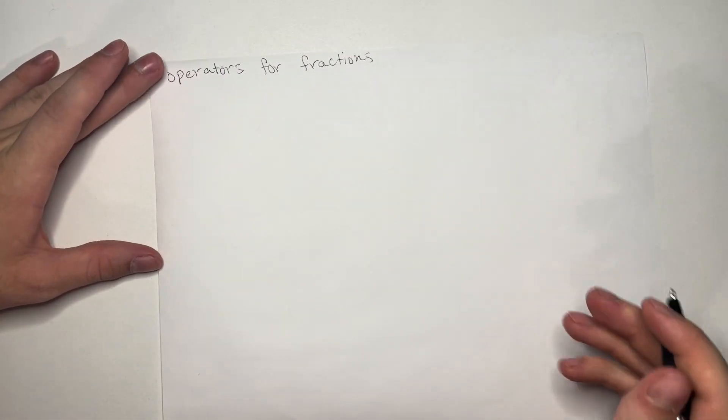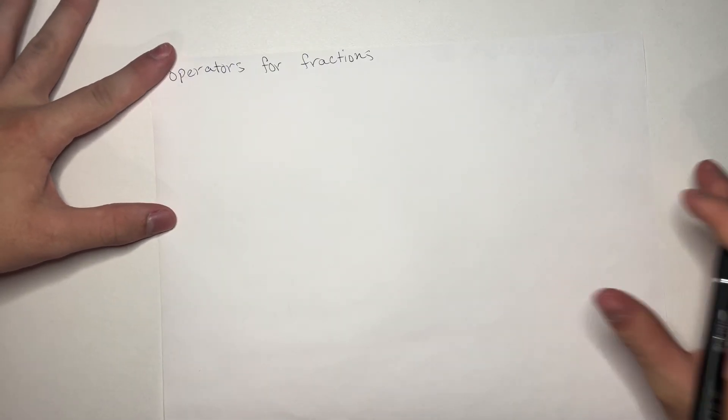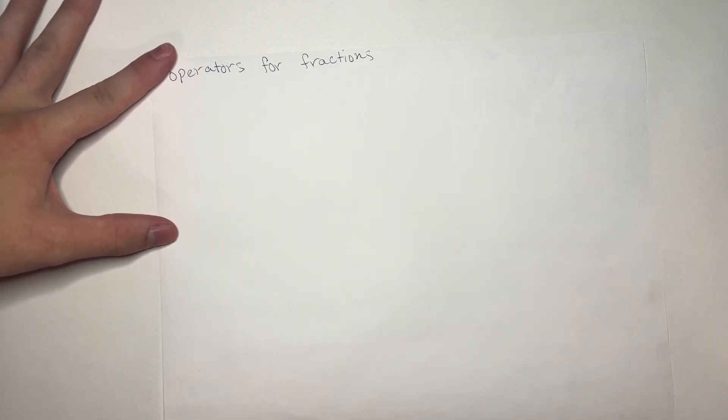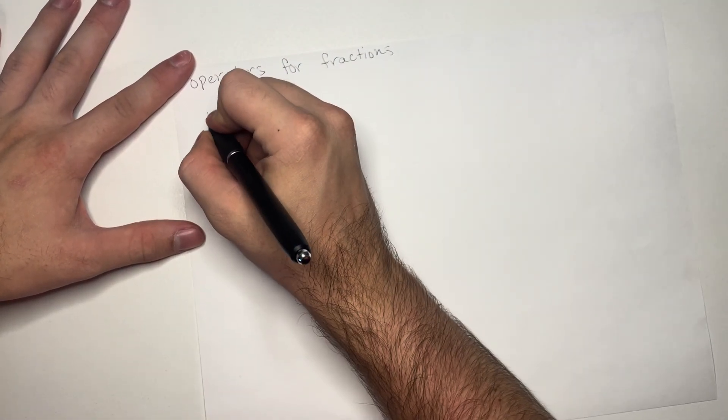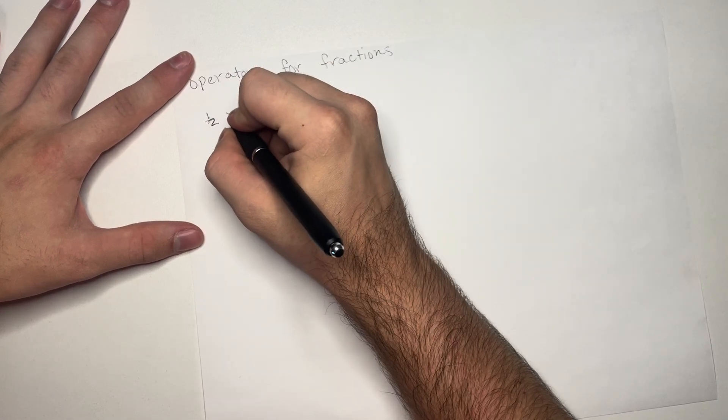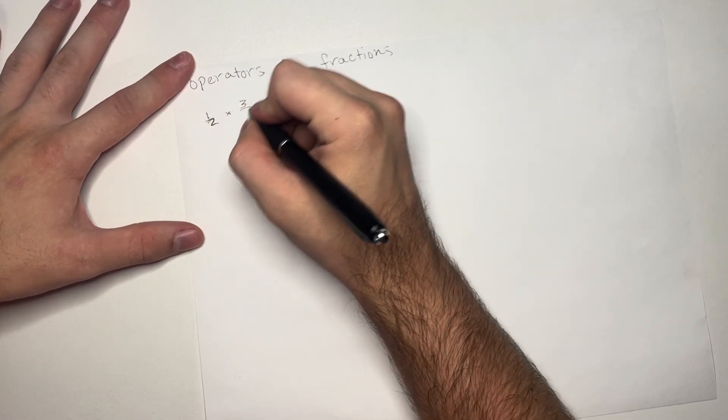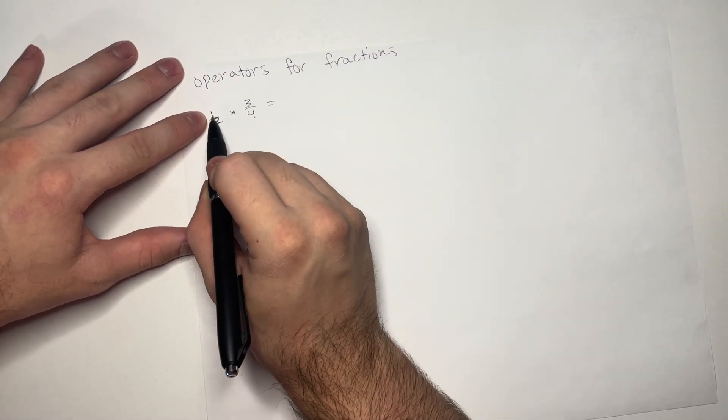And so, this time, we're going to go ahead and start with multiplication, because multiplication and division are slightly easier for fractions than addition and subtraction. So, we're going to start with 1 over 2 times 3 over 4. And the way that we do this is that we simply multiply across.